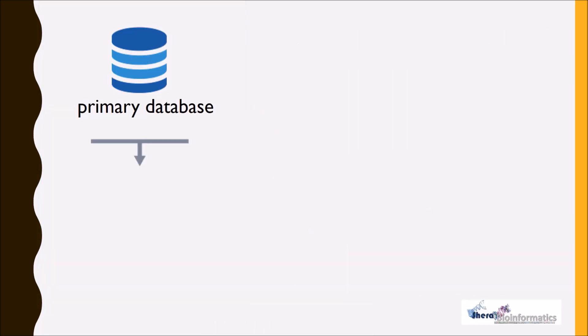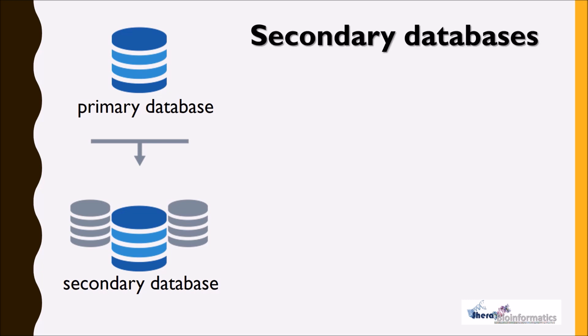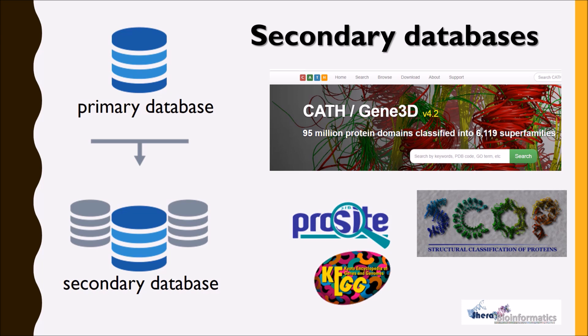Secondary databases are those databases which are derived from primary databases. These databases are well-analyzed and annotated versions of the primary database. Some examples are CATH, SCOP, PROSITE, and KEGG.